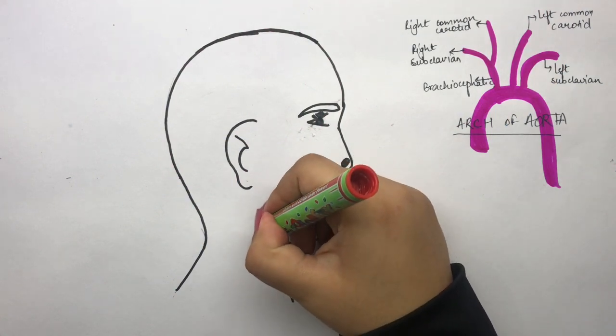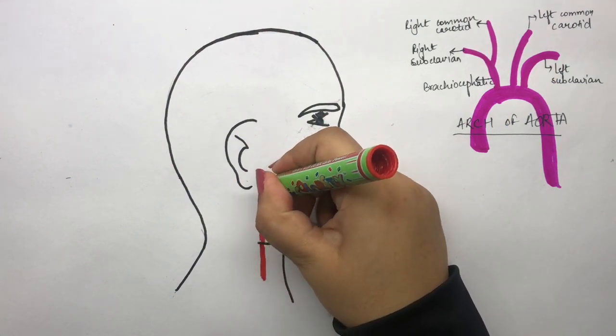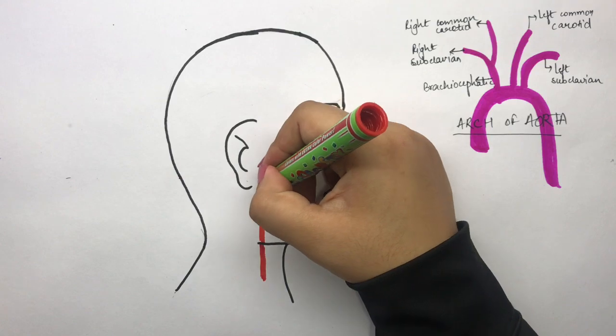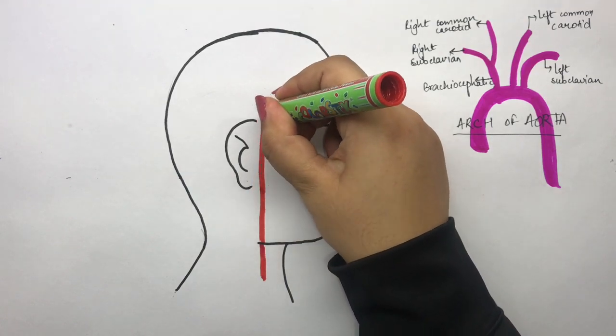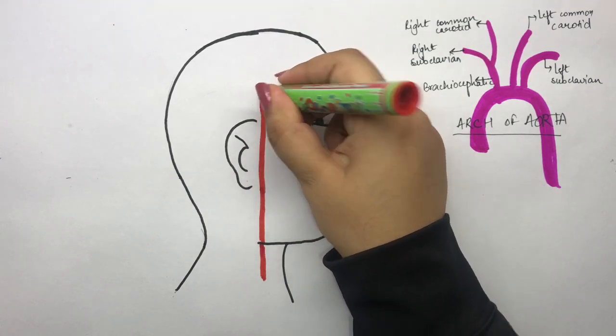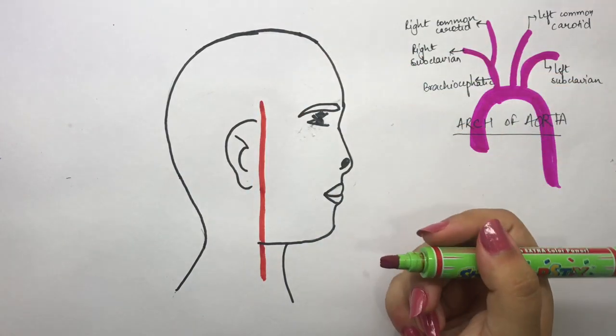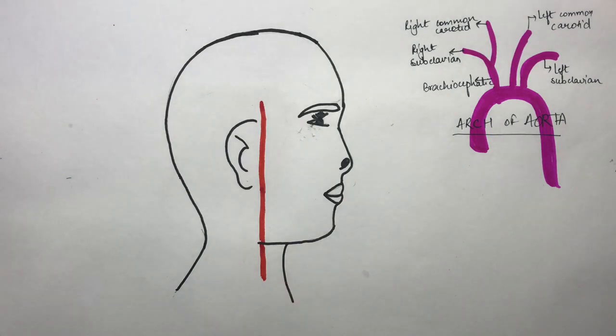Now let's look at the extent of the external carotid artery. The external carotid artery extends from the superior thyroid region to the temporal region.